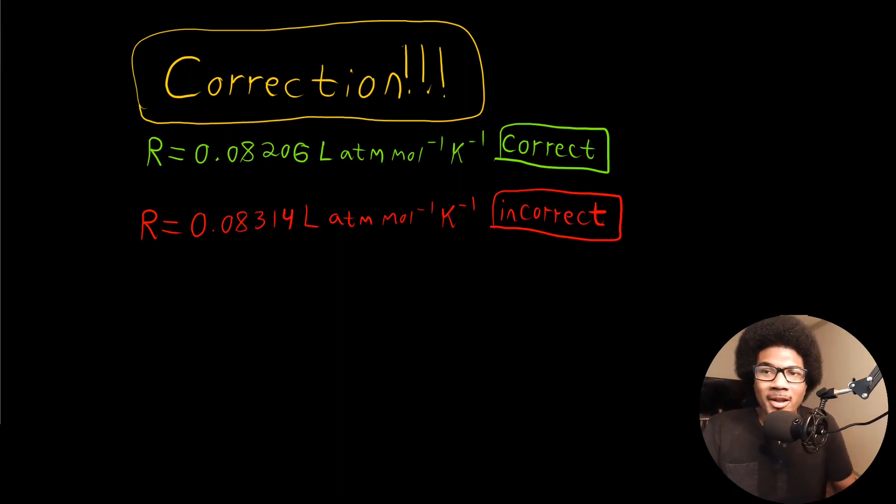Before we begin this video I want to issue a quick correction. Throughout this video I actually use the incorrect gas constant. The universal gas constant is actually this number 0.08206.